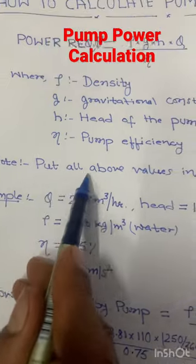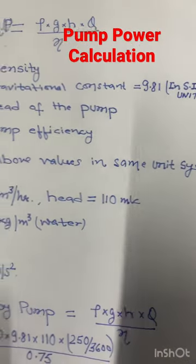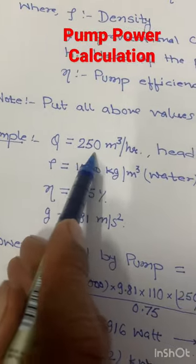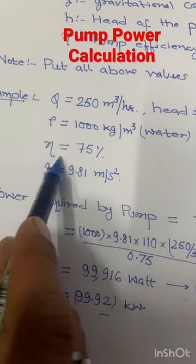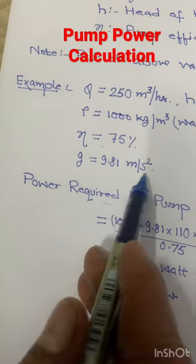We have to note that we should put all our values in the same unit system. Example: q is 250 m³/hr, h is 110 mlc, ρ is 1000 kg per meter cube. If we put all these values in our formula...